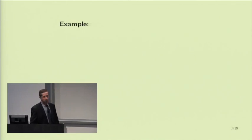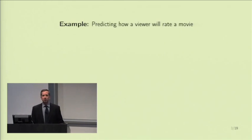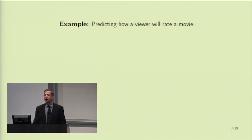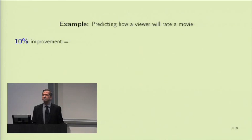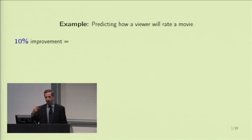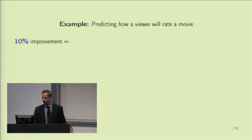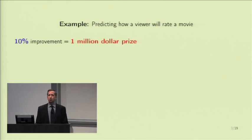The example of machine learning I'm going to start with is how a viewer would rate a movie. That's interesting for us because we watch movies, but it's very interesting for a company that rents out movies. A company, Netflix, wanted to improve their in-house system by a mere 10%. They make recommendations when you log in — movies they think you will rate highly — and they wanted to improve that system. A 10% improvement was worth $1 million, which was paid out to the first group that managed to get that improvement.